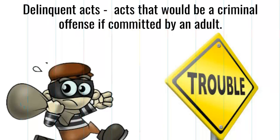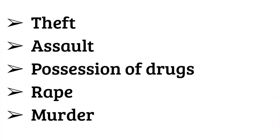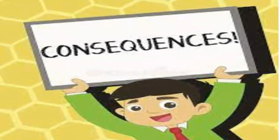Delinquent acts are acts that would be a criminal offense if committed by an adult. Essentially, if a kid and an adult both committed the act, both would get in trouble. Some examples of delinquent acts include theft, assault, possession of drugs, rape, and murder. The consequences for delinquent acts vary depending on the severity of the crime.